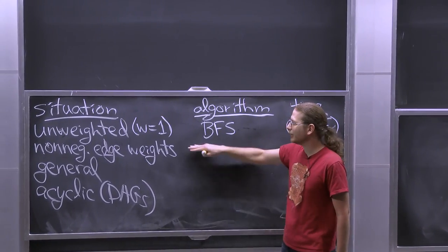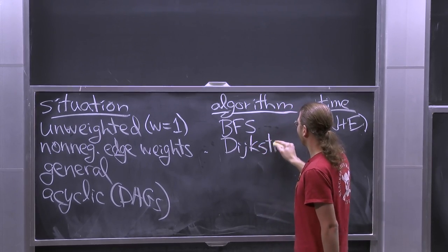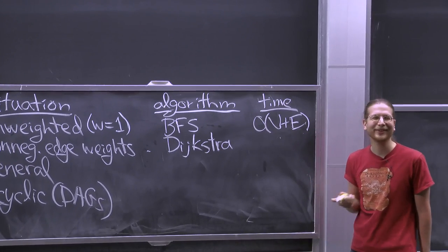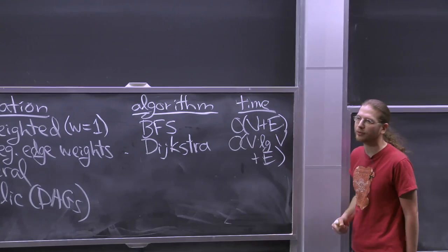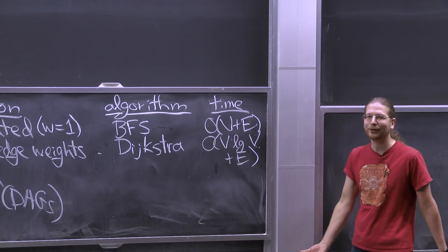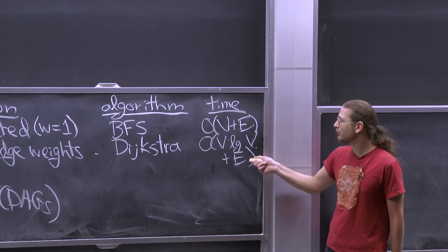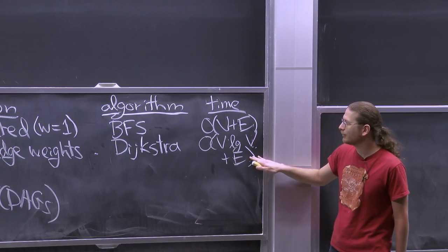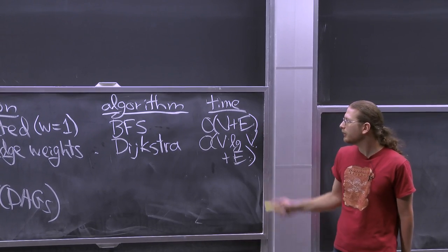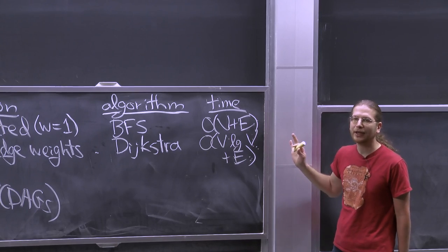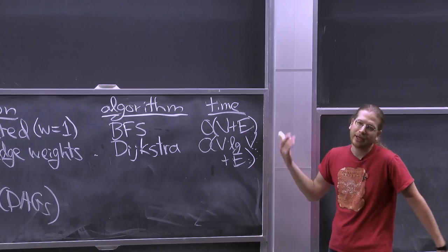For non-negative edge weights, you use Dijkstra. And that takes O(V log V + E). This answer depends on which heap structure you use, but this is the best we know. If you use a Fibonacci heap, you achieve O(log V) for extract-min and O(1) amortized for each decrease-key operation. For moderately dense graphs where E is bigger than V log V, this is the same as V + E. If your graph is sparse, like E is order V, then you lose a log factor.